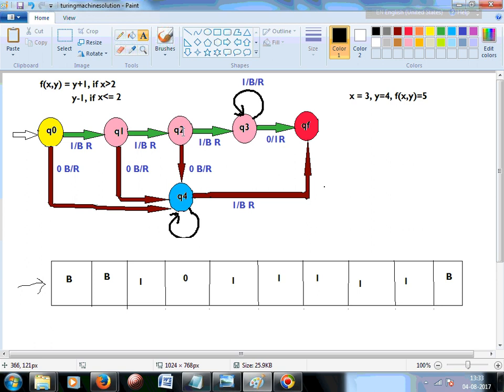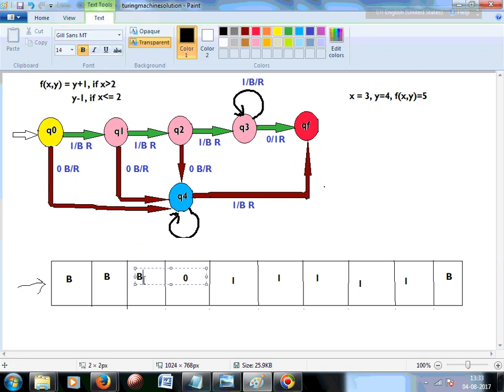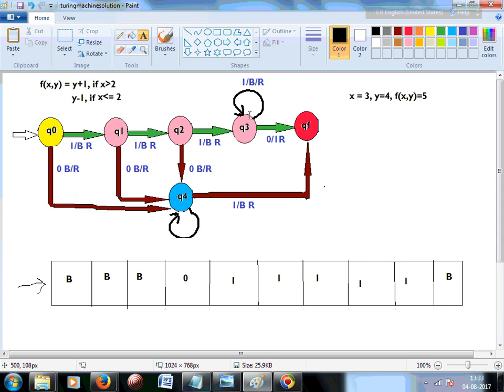So now q2 state, again, the next one is 1, so we make it blank and move to the right. By this stage we are very sure now that x is greater than or equal to 2.